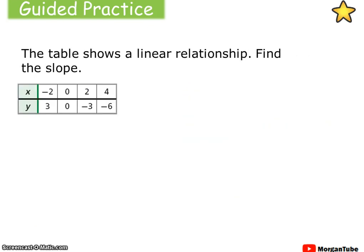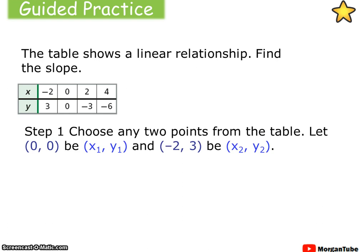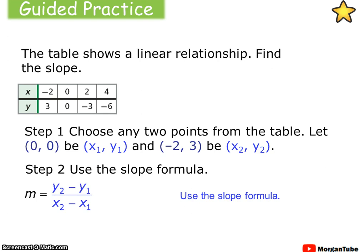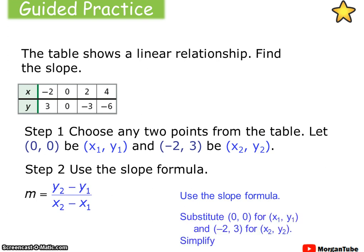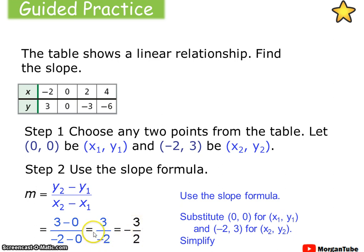Now you guys try this one using the table and the slope formula — find the slope. You could choose any two points along this table, being that it's all part of a linear relationship. I chose (0, 0) — those easy computations — and (negative 2, 3) for my second point. Using the slope formula, I plug in my values for y2 and y1. The difference of y's over the difference of x's gives me a slope of negative 3 halves. Notice that this initially came out as 3 over negative 2, which is the same thing as negative 3 halves — you can pull that negative sign out in front of the fraction.